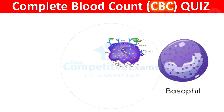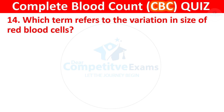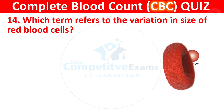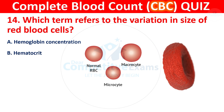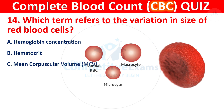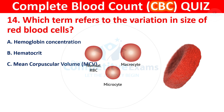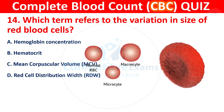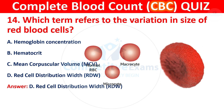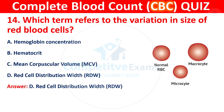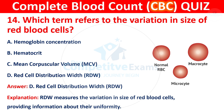Question 14: Which term refers to the variation in size of red blood cells? Your options are hemoglobin concentration, hematocrit, mean corpuscular volume (MCV), or red cell distribution width (RDW). The correct answer is D, red cell distribution width (RDW). RDW measures the variation in size of red blood cells, providing information about their uniformity.